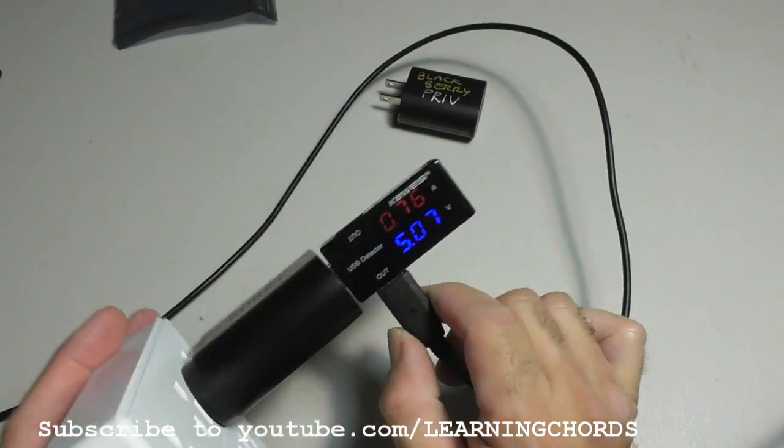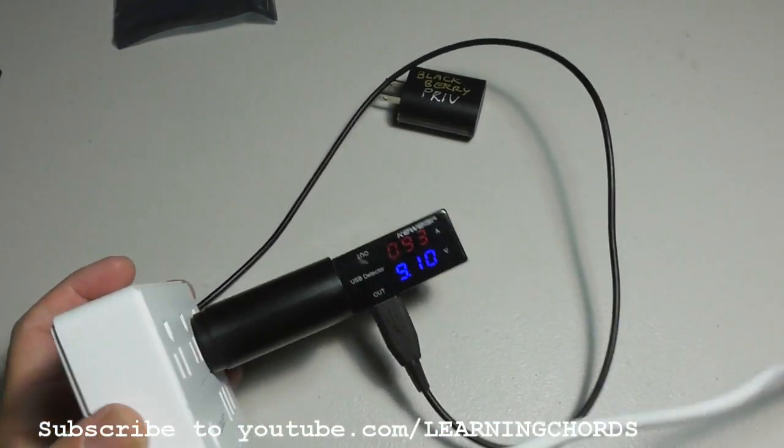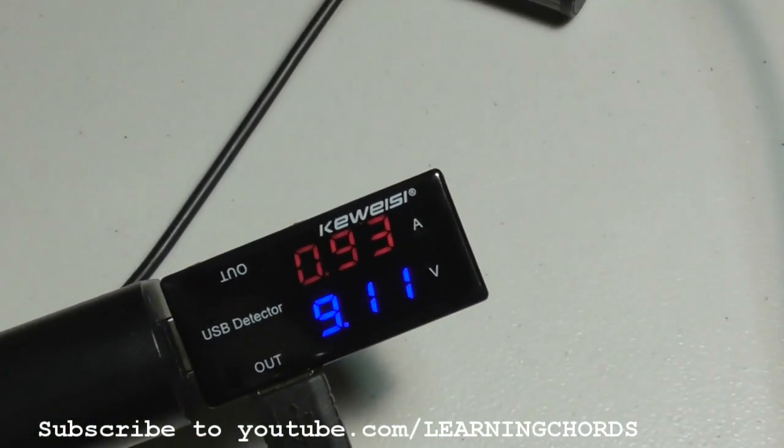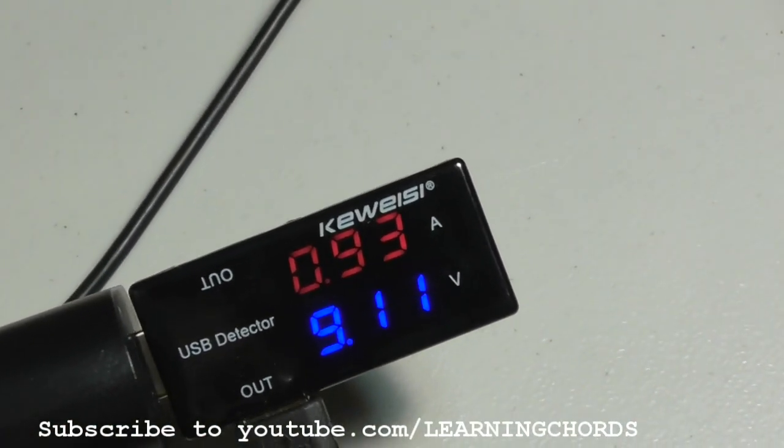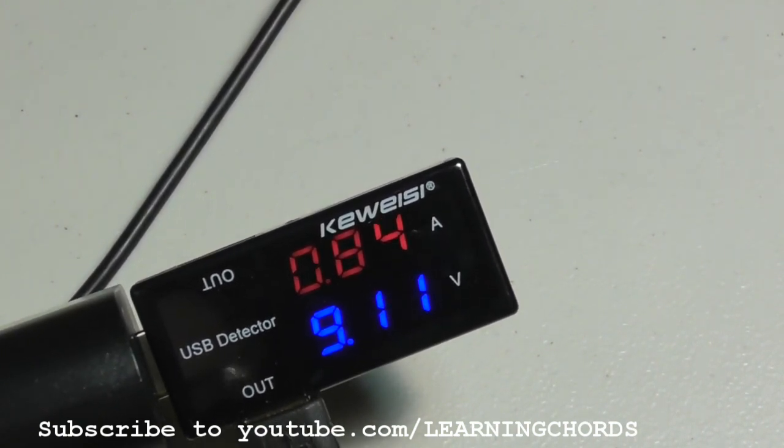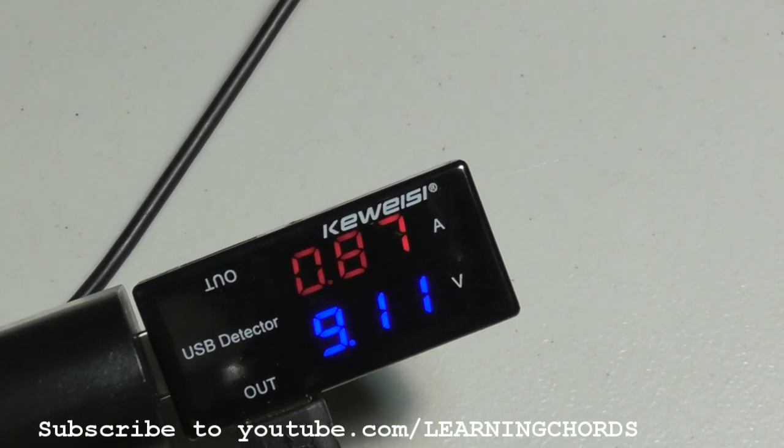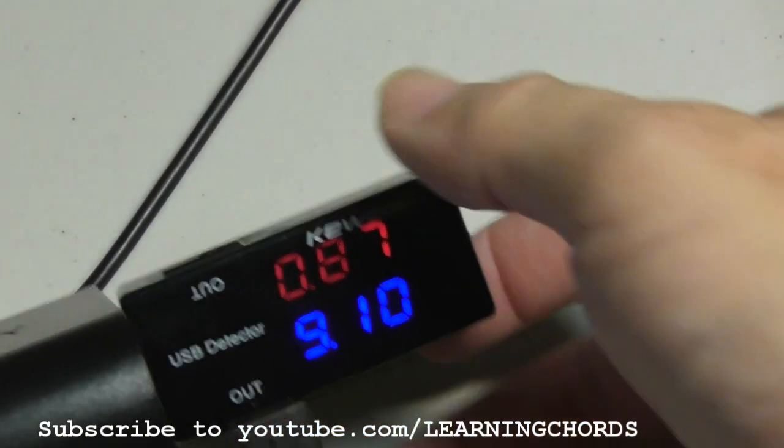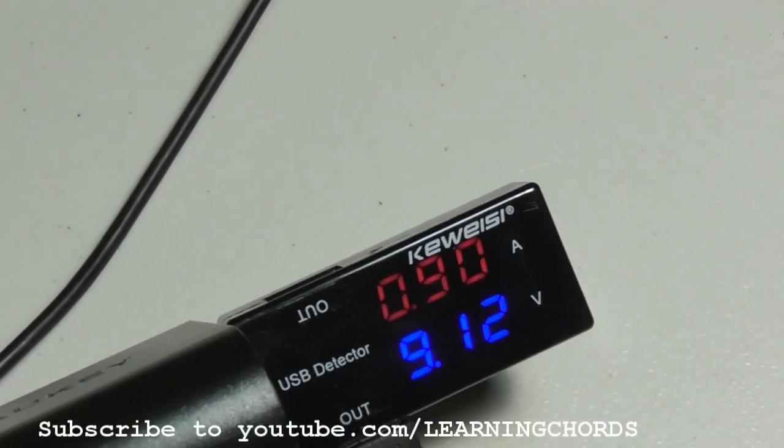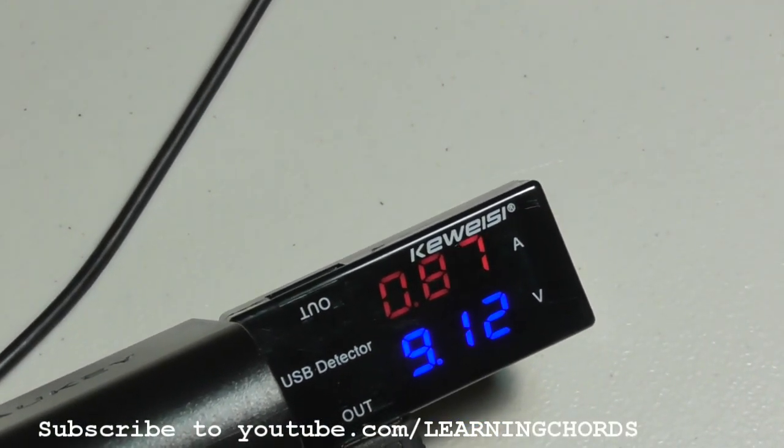And we're going to unplug this now and we are going to plug in the fast charger. The fast charger is showing the same current, 0.9 amps, but we're at 9.11 volts.